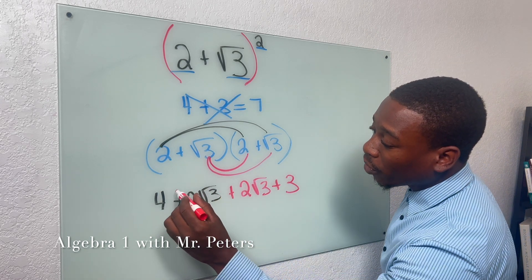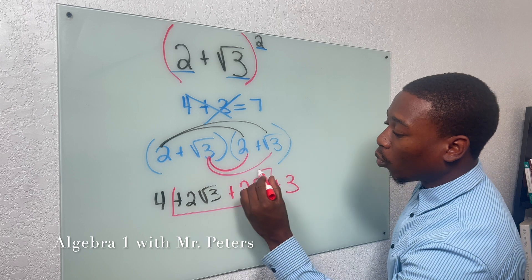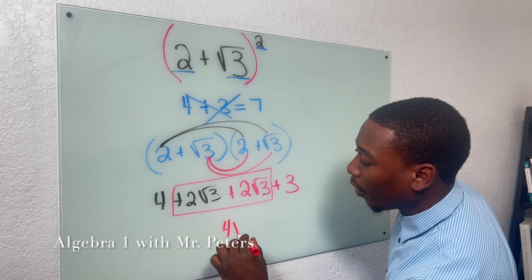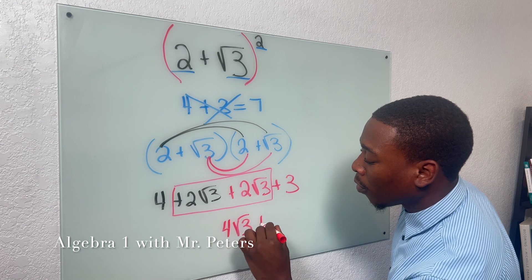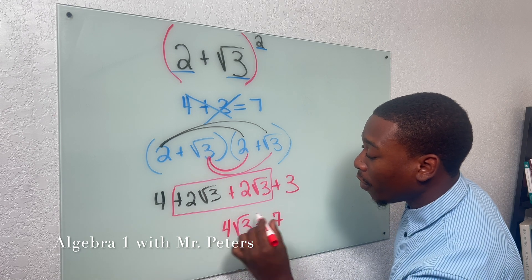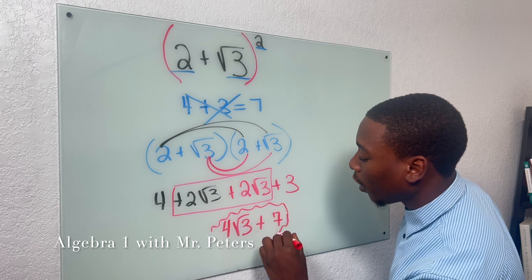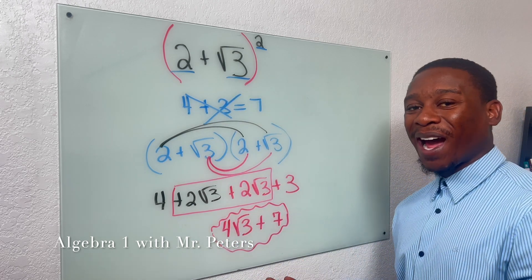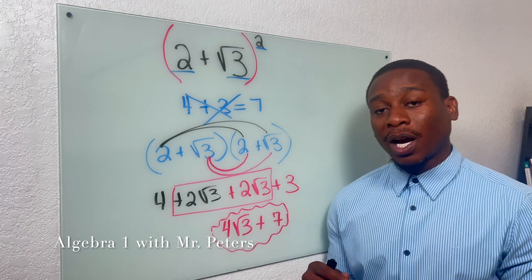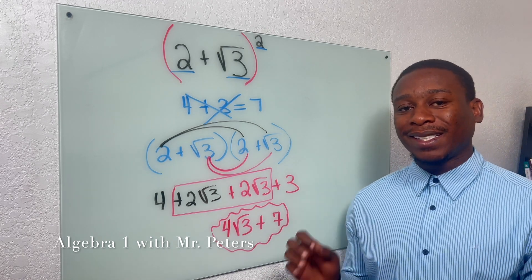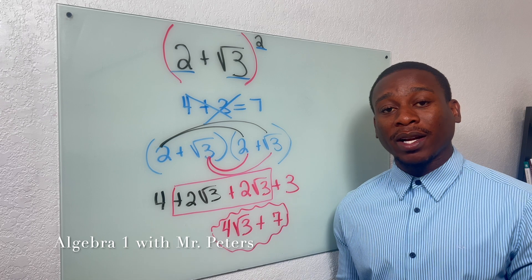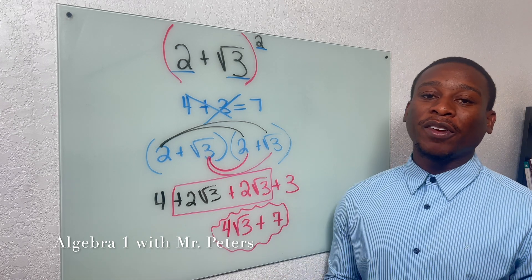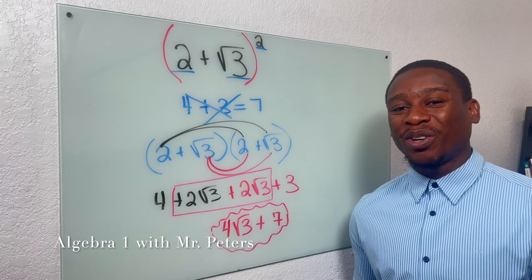So this is how we properly solve this problem. And then the final step is just to combine our like terms. So we're going to have 4 radical 3 plus 7. And this would be our final answer once we take this binomial to the second power. So please just make sure you guys remember that important tip when we're talking about adding and subtracting radicals. I really hope you found this video helpful today. I'm Professor Peters. Thank you guys so much for joining me today.